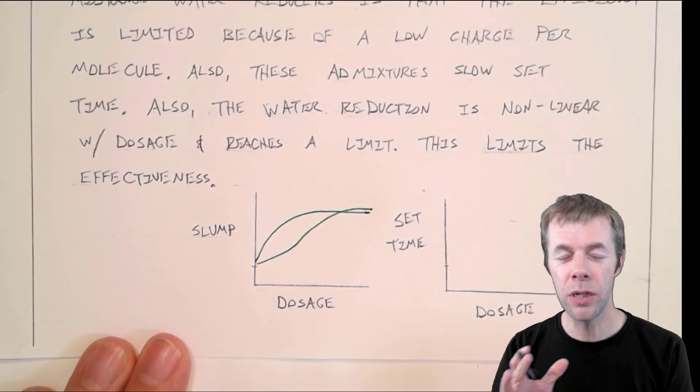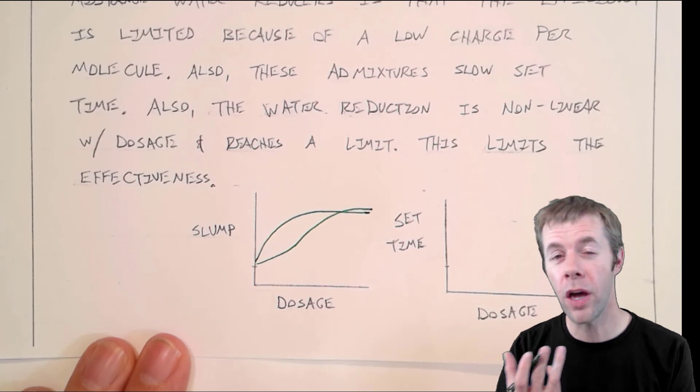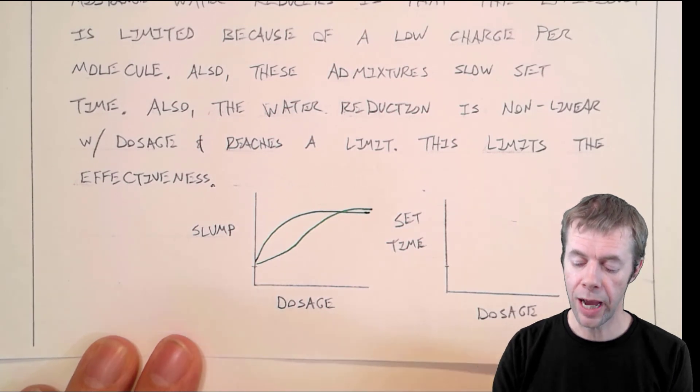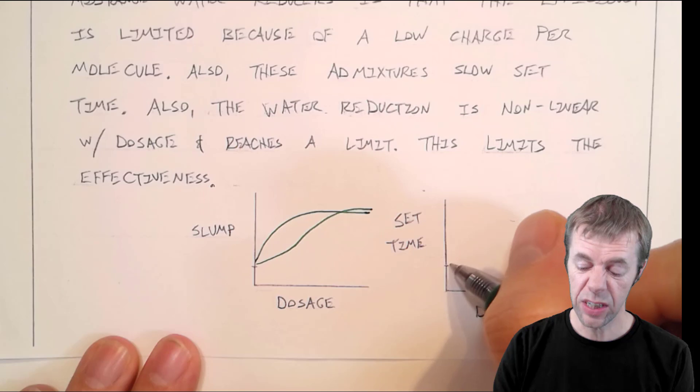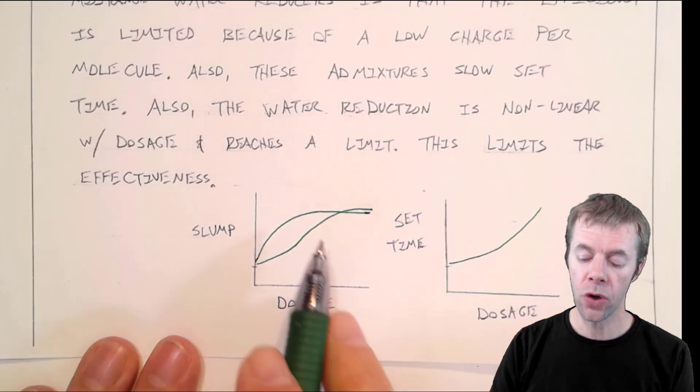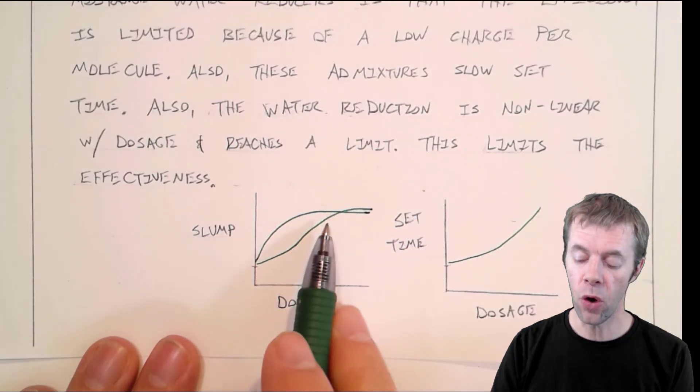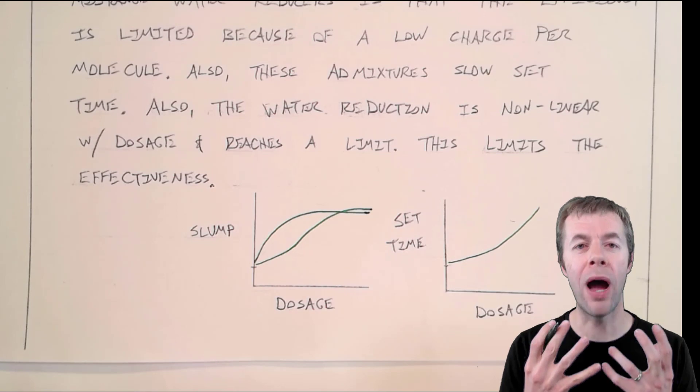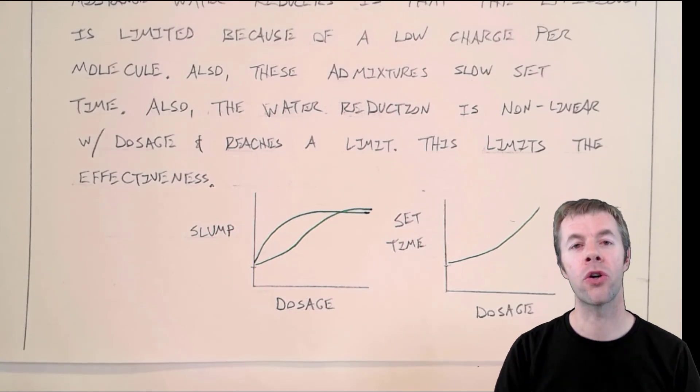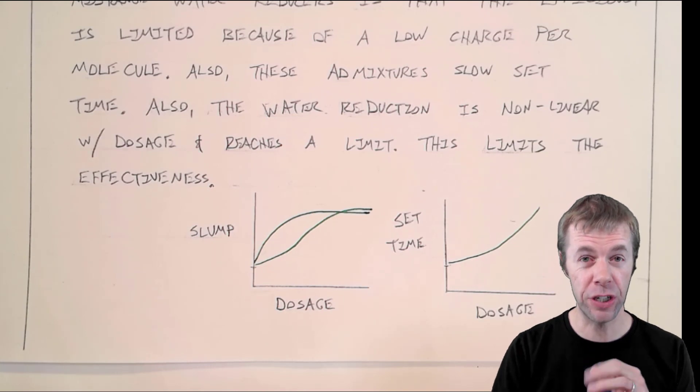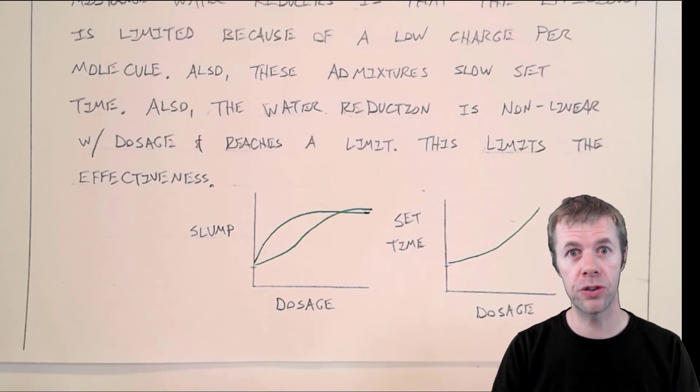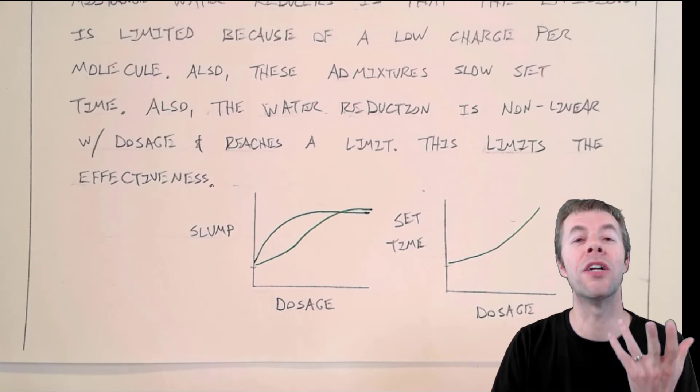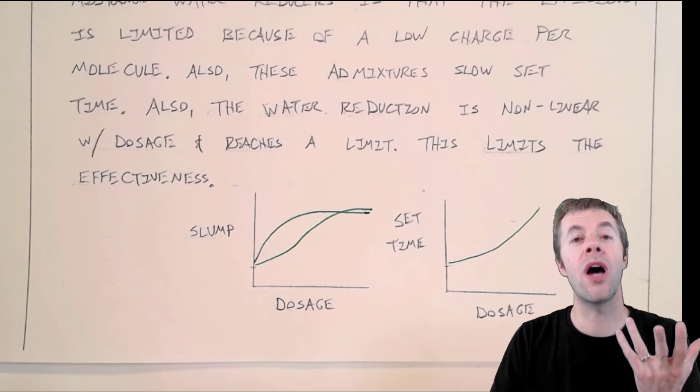It really depended on the cement and on the other admixtures in your system. And with set time, the same thing would happen. As your dosage went up, your set time would start to go up. So when you started to get near this actual plateau, your set times were so high that it wasn't really constructible concrete because nobody wants to sit around and wait hours for the concrete to get hard, especially if you have some final finishing. That's just not productive.